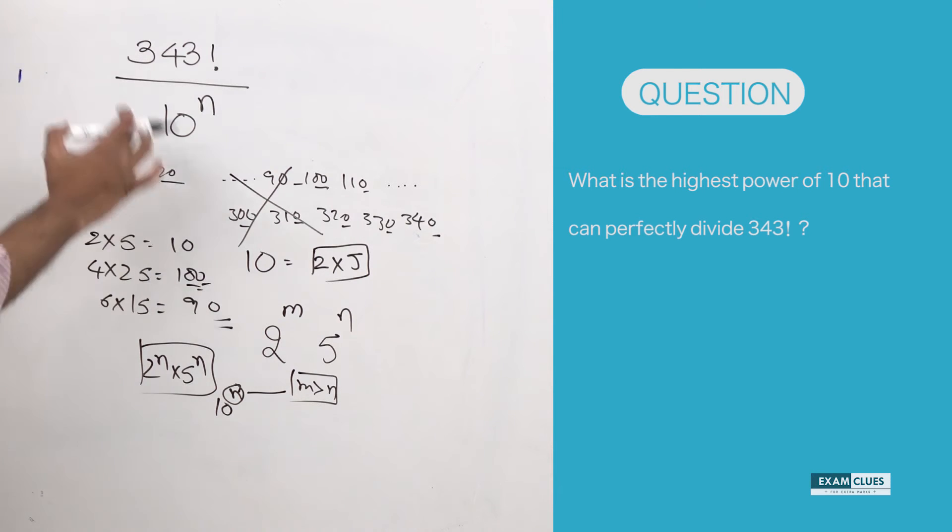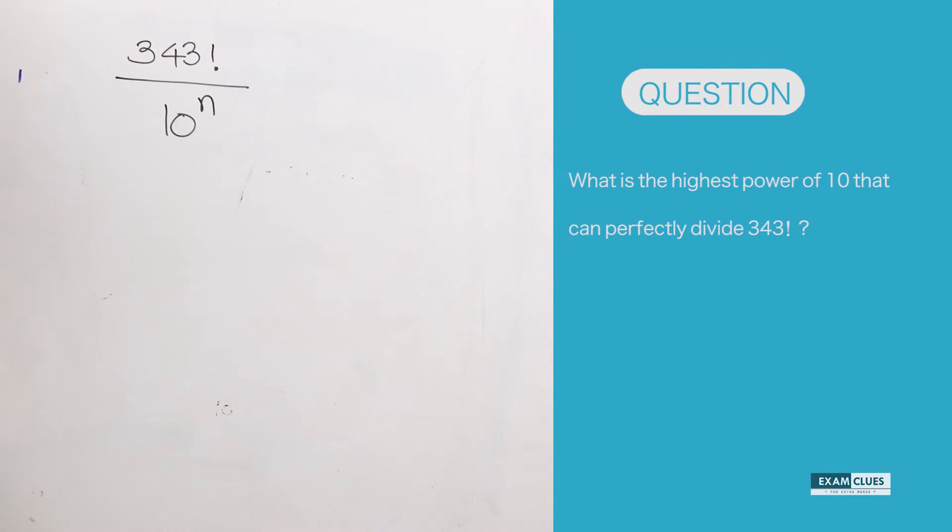So that's how we can find the total number of tens that exist within 343 factorial. Here we'll answer this question using a formula which has been very famous. Instead of trying to solve this using the traditional method, we'll use the formula to solve it quickly.